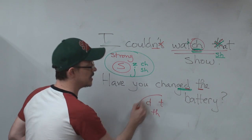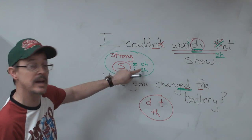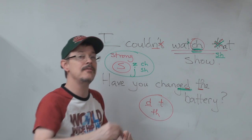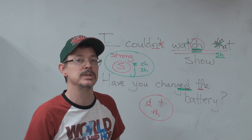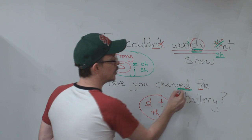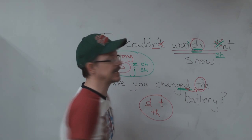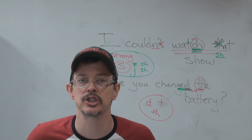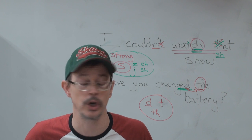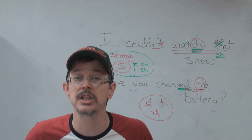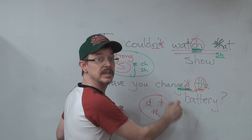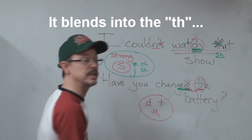These are one sound family. This is the S sound family. This is the D sound family: D, T, TH. So when we have similar sounds next to each other, we connect and keep the second sound. We don't say 'changed the' — we say 'changed the.' Changed the. The D disappears and blends into the TH.